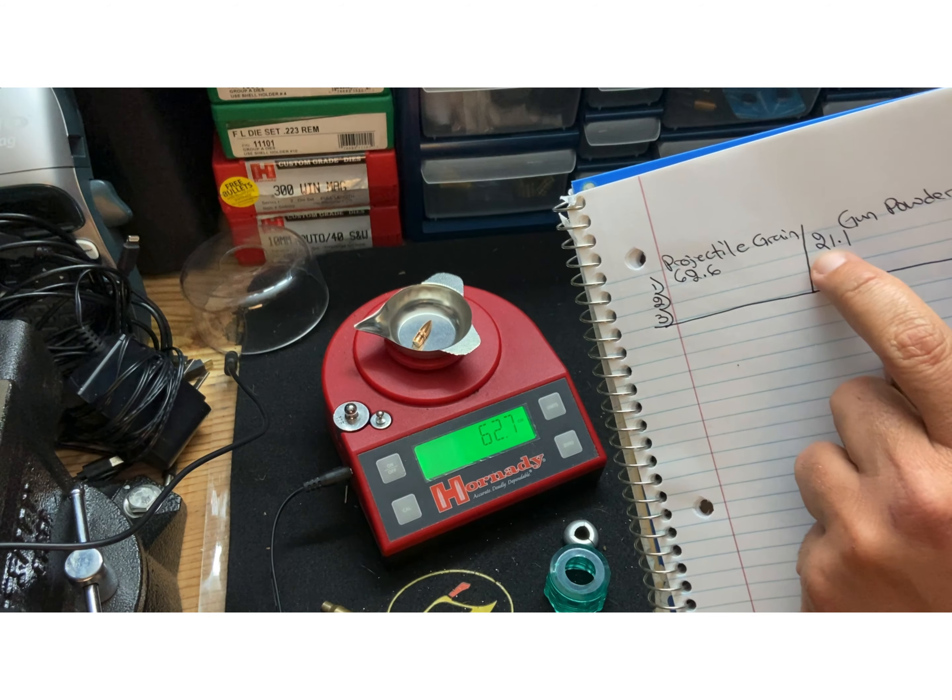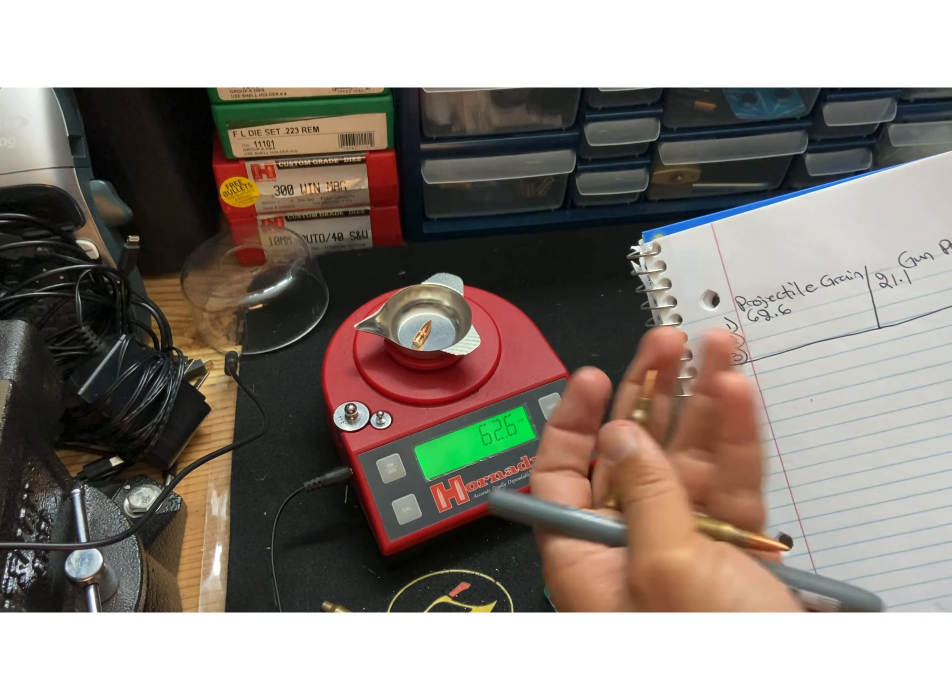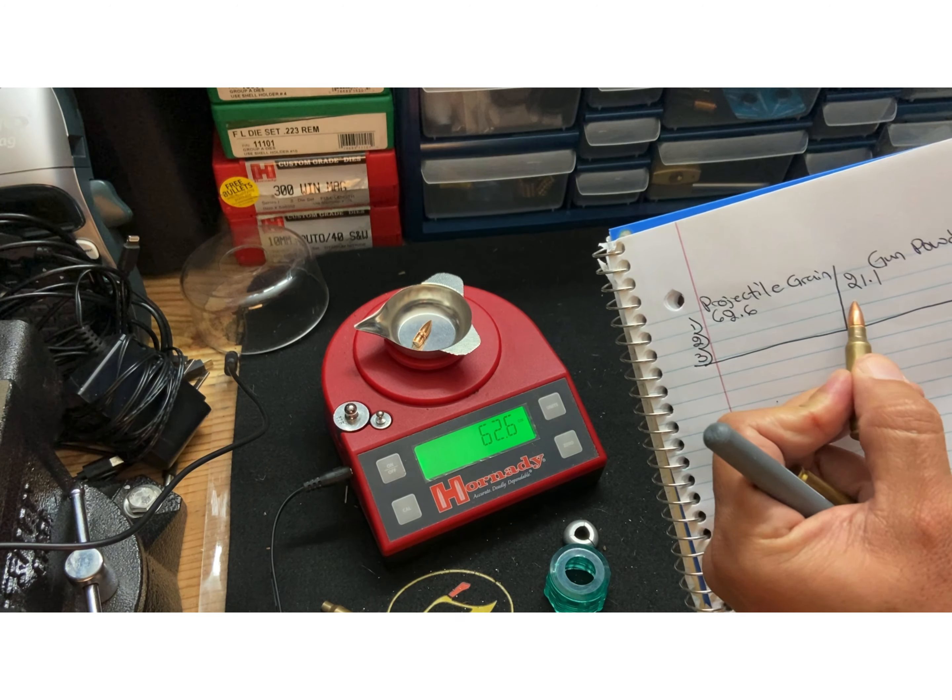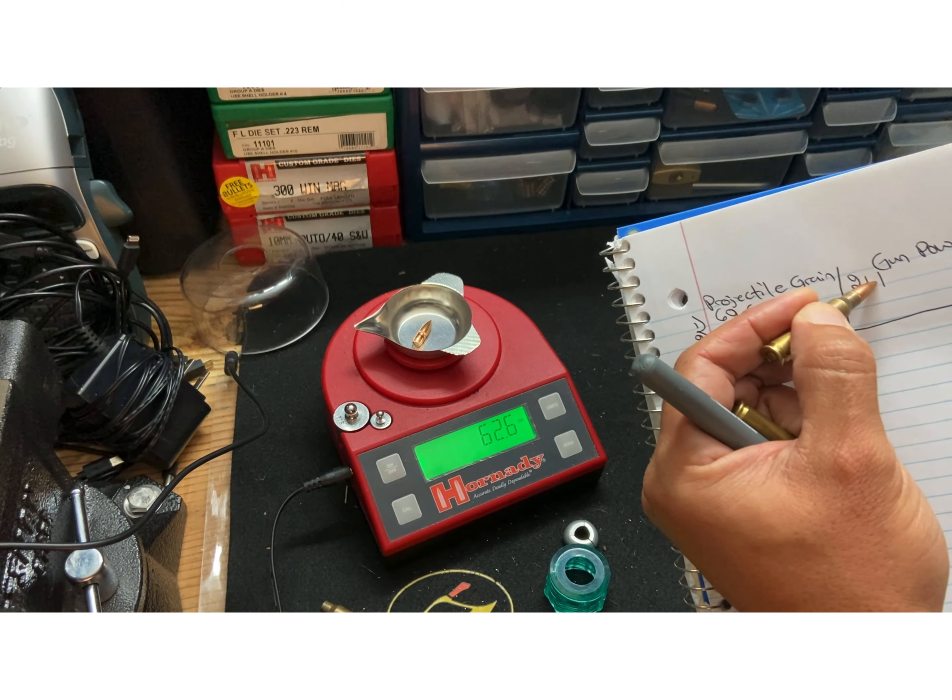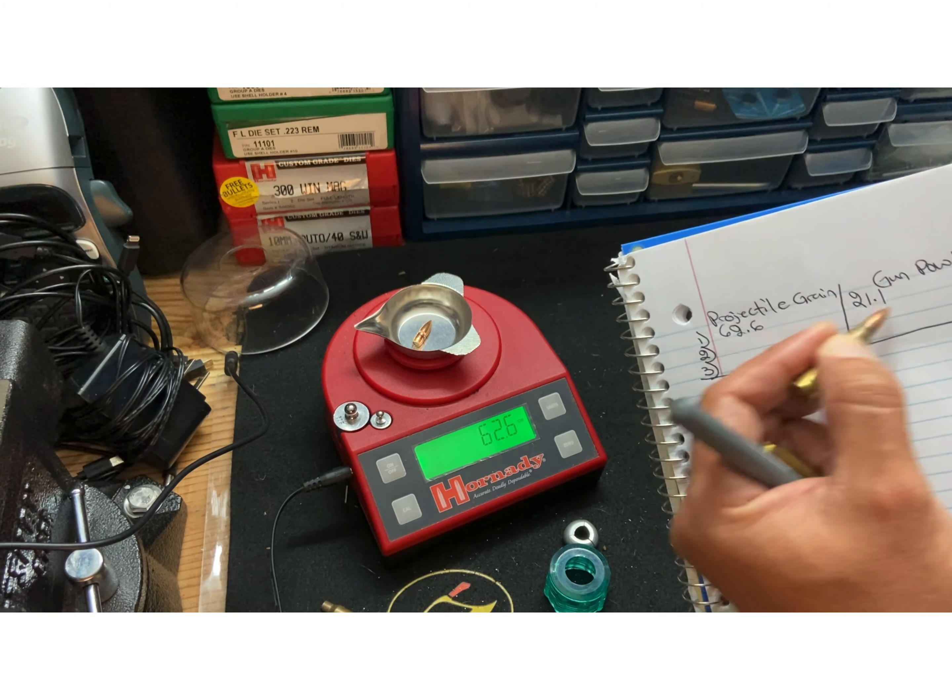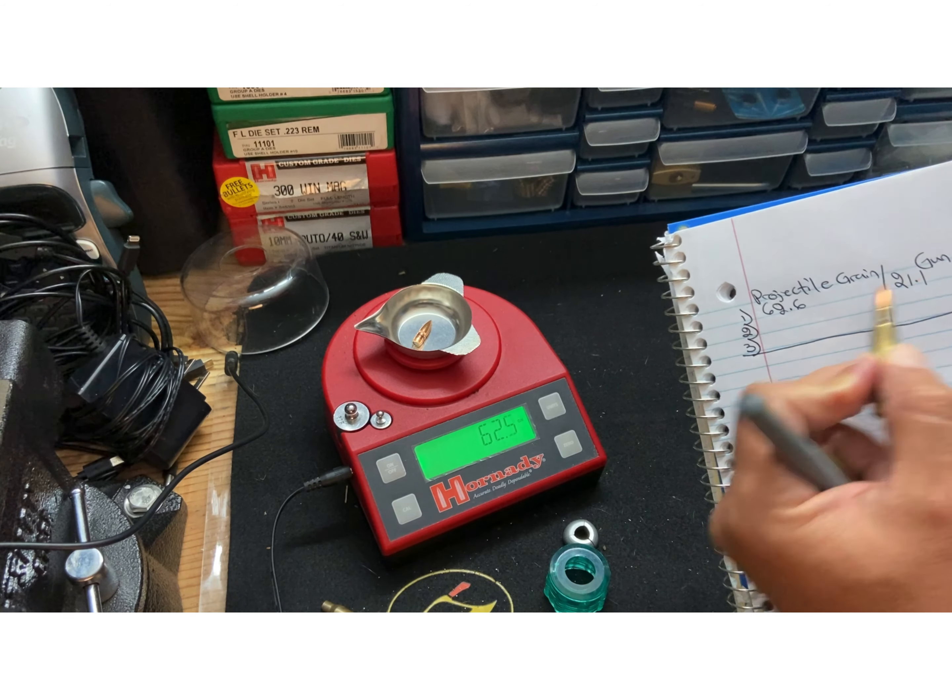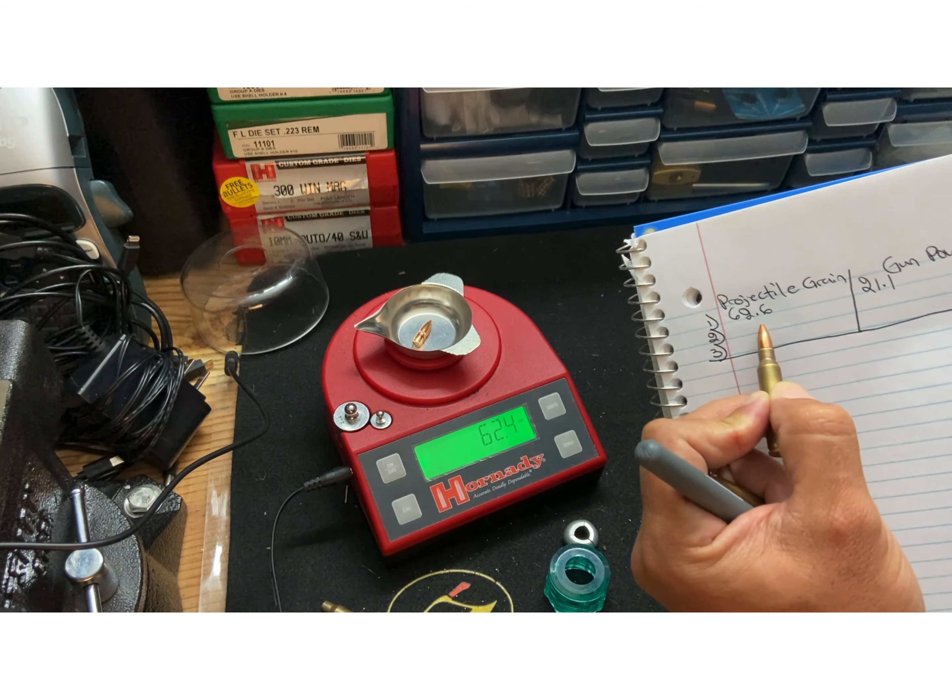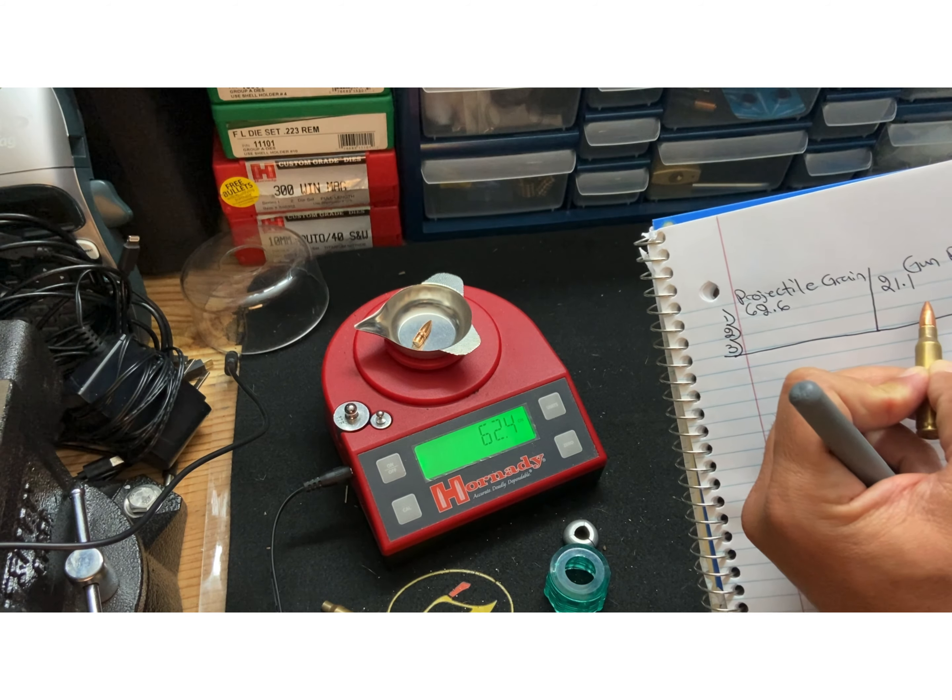And I have 21.1 grains in gunpowder. So my other two should be 62.6, 62.6, 21.1, 21.1. Now if it's off by 21.0 or 21.1 or 21.2, I'm okay with it.